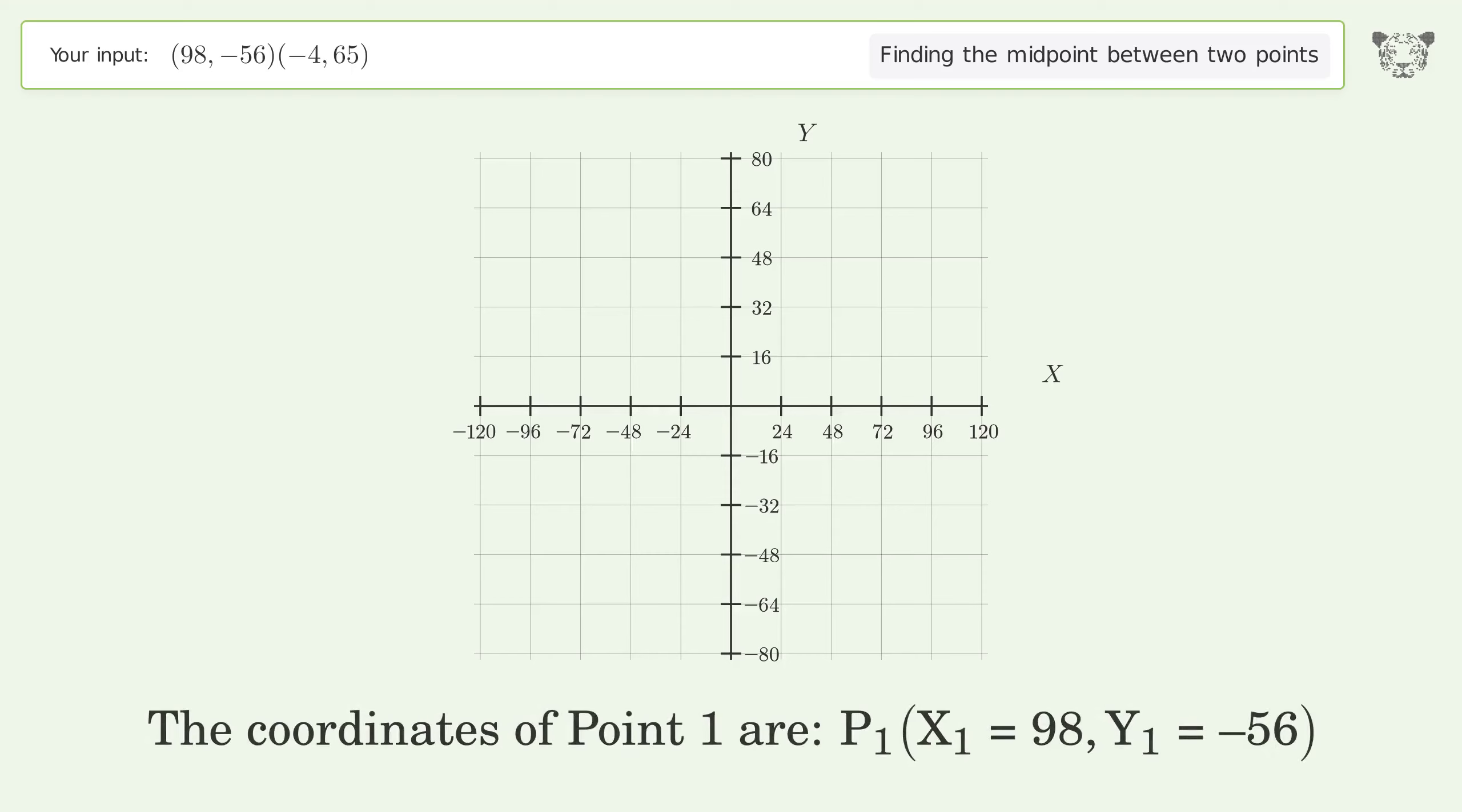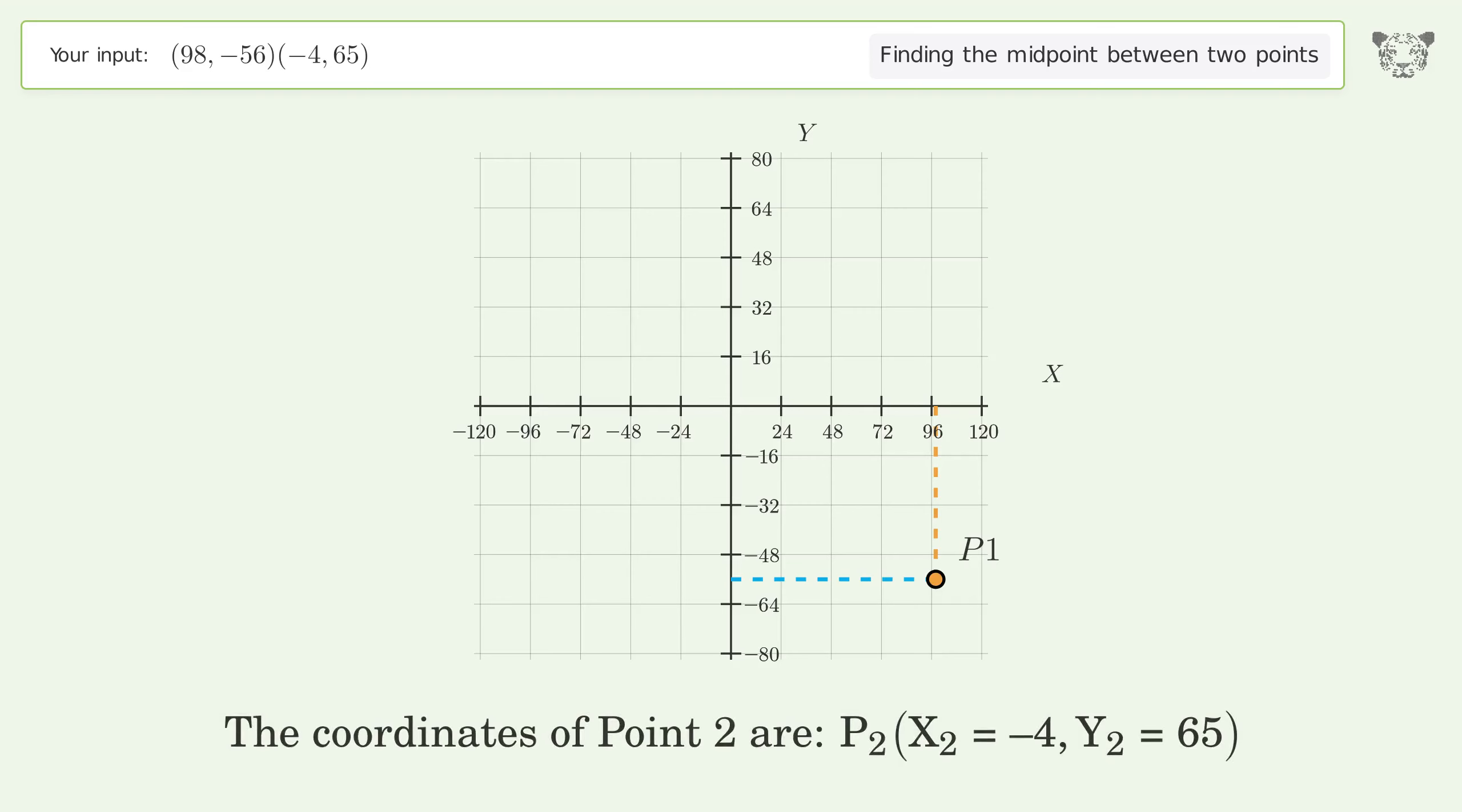The coordinates of point 1 are x1 equals 98, y1 equals negative 56. The coordinates of point 2 are x2 equals negative 4, y2 equals 65.